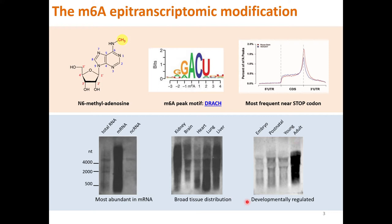The M6A modification is usually installed in the DRACH, or more narrowly, RRACH motif sequences, where D stands for the base A, G, or U; R stands for A; and H stands for A, C, or U. On average, there are about 3 to 5 M6A sites per 1 kilobase length of mRNA.